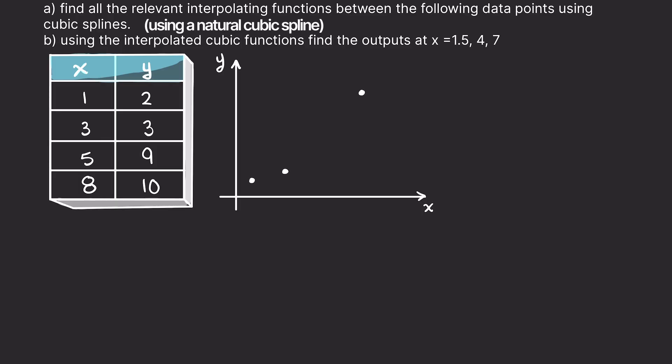Cubic spline interpolation is a mathematical technique used to approximate a smooth curve passing through a given set of points. It's especially useful in situations where we have scattered data points and we want to create a continuous curve that captures the general trend. We can then use that curve to find valuable information about our data.